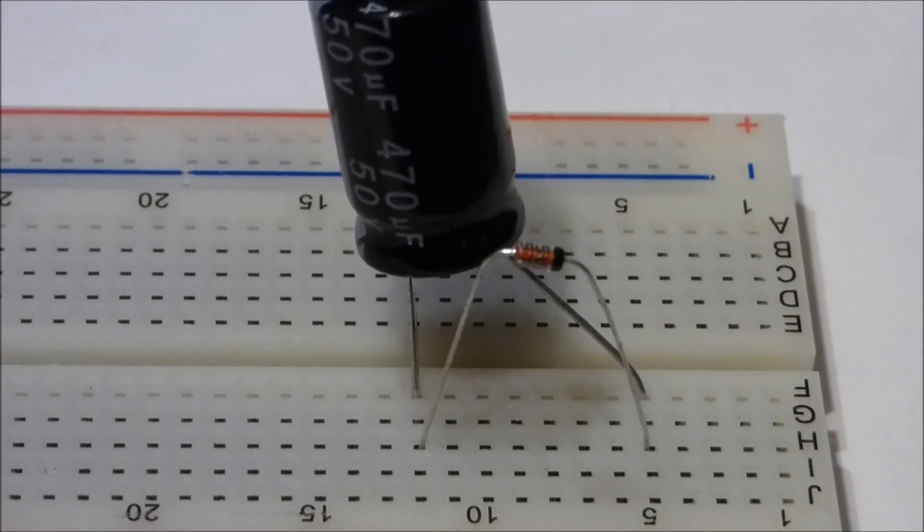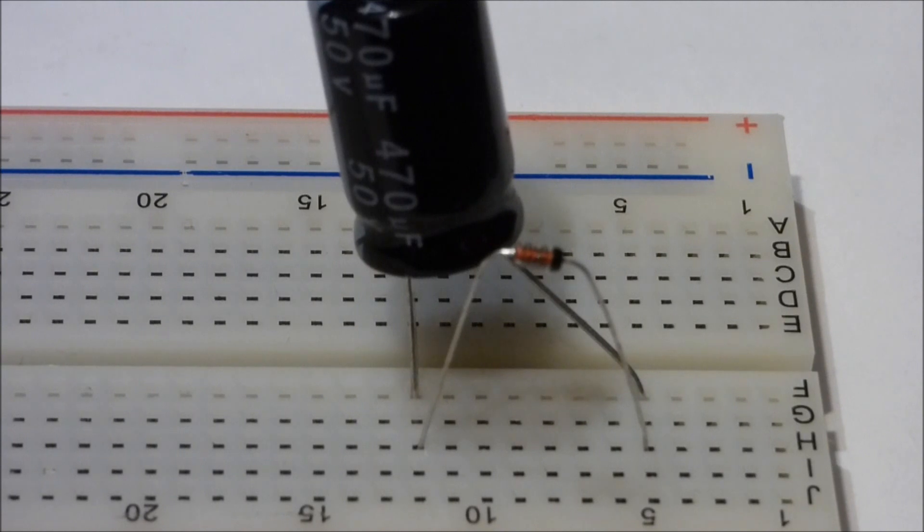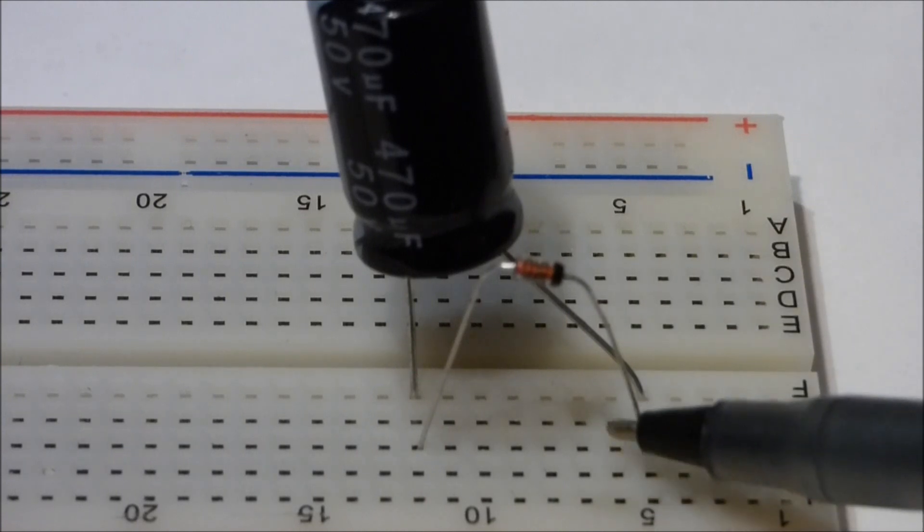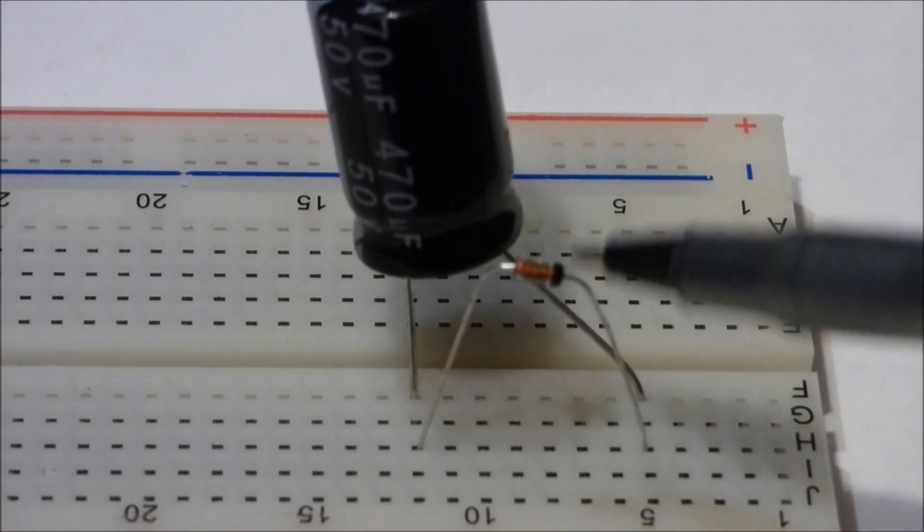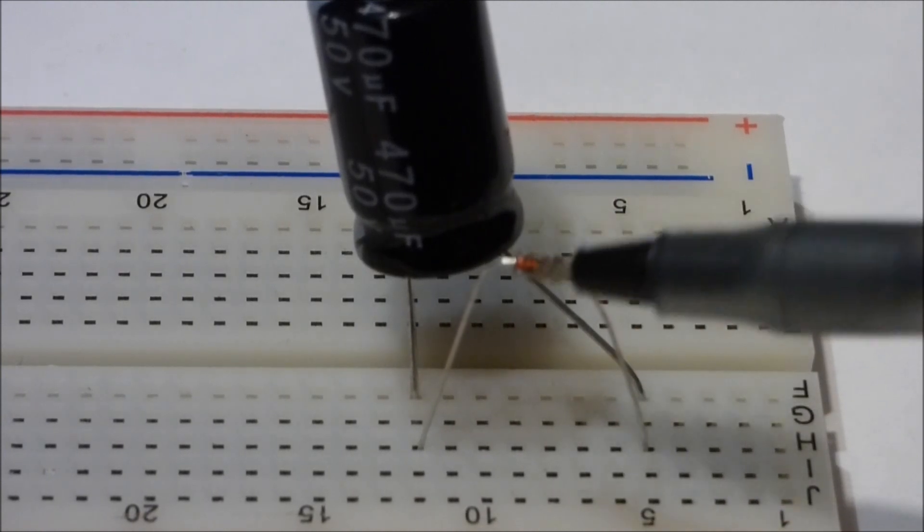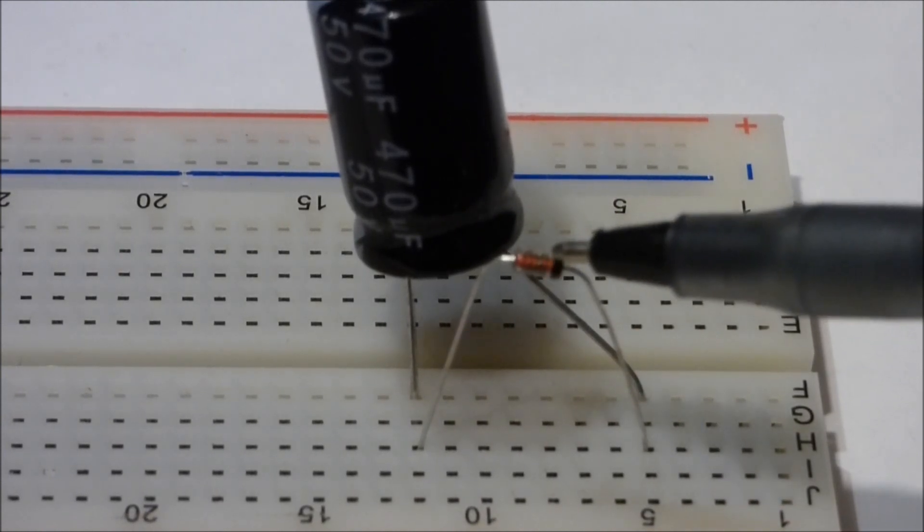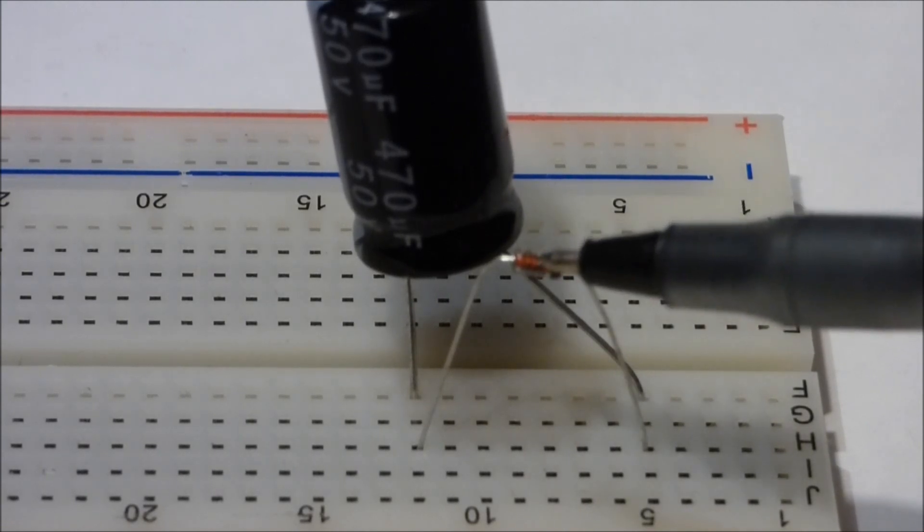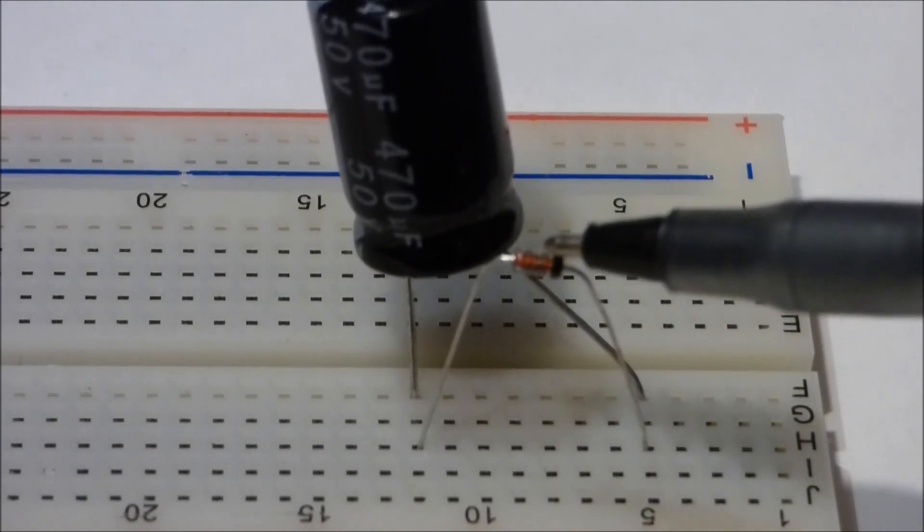I'm going to show you a really easy way to find out what the rating is for a Zener diode if you're not sure. You can get an approximate value. You do need a power source higher than the rating of the Zener diode, so if you're really unsure of what it could be, you're just going to have to keep trying higher power sources until this process works.